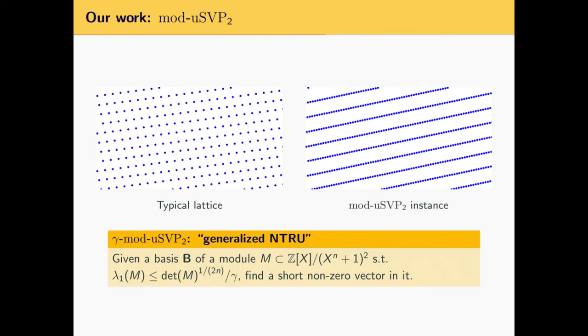In our paper, we study the structured version of USVP that we call module USVP in rank 2. It asks, given the basis of a lattice L whose elements are pairs of polynomials modulo x to the n plus 1, to find a short non-zero vector in it, with the guarantee that the shortest element of L is a lot smaller than the lattice's root volume.